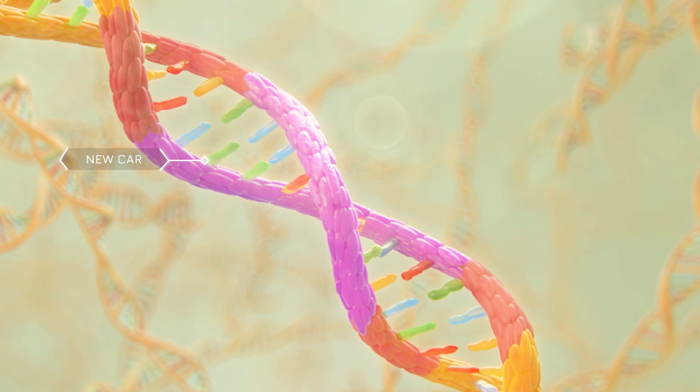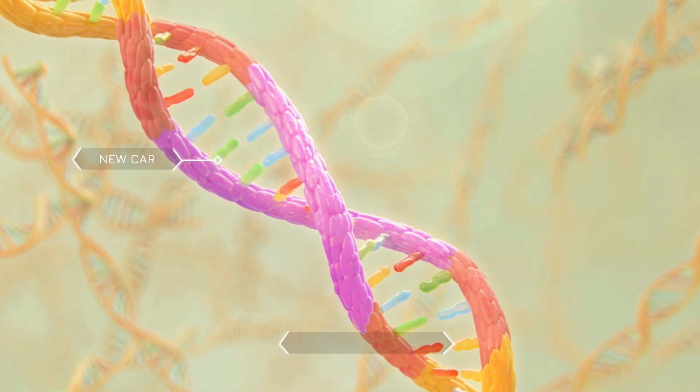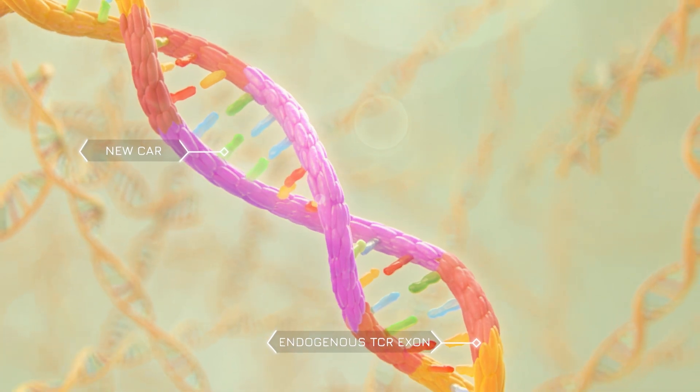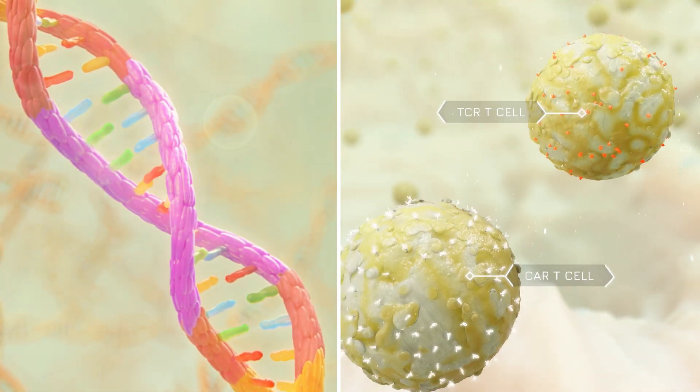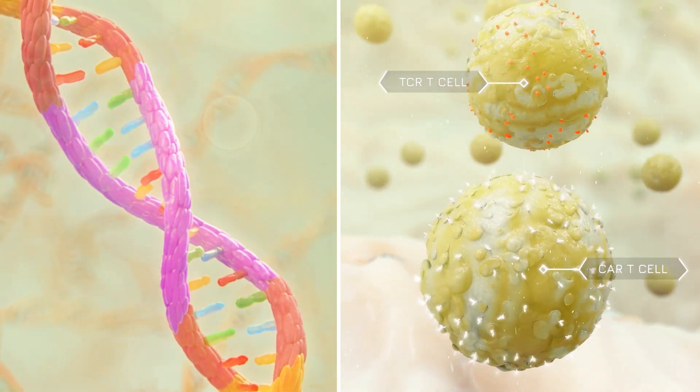By targeting CRISPR synthetic guide RNA and the Cas9 protein to the endogenous TCR exon, knockout and gene insertion can be done in one step to generate universal CAR or TCR T-cells.